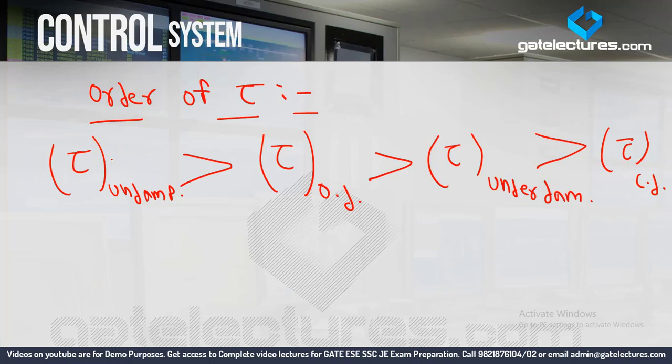To summarize: to find time constant, find the pole value, identify the pole nearest to the imaginary axis on the negative real side, eliminate the negative sign, and take one upon that value — that is your time constant. In the next class we will discuss some problems on first order and second order systems, and after that we will start steady-state error. If you have any doubt, post it in the comment section. Goodbye!